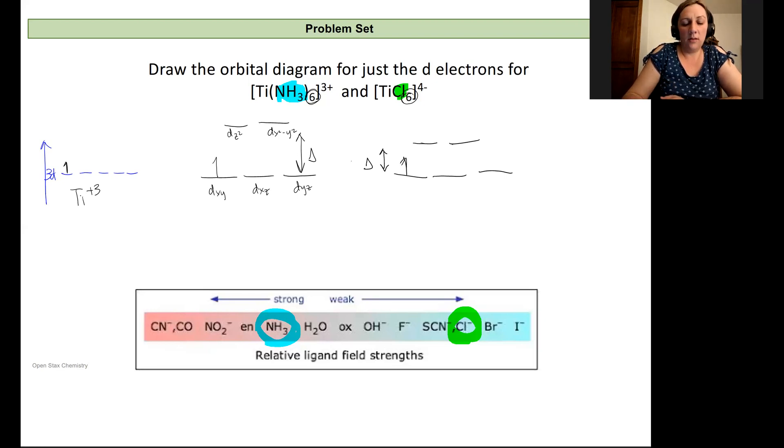And so if we had more than one electron in here, that might play a meaningful role in whether or not we have a paramagnetic or diamagnetic compound, if we have unpaired or paired electrons.